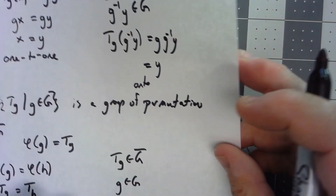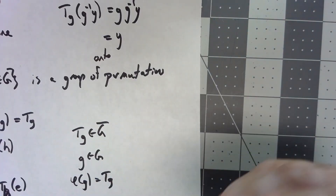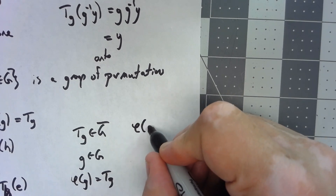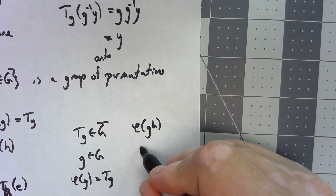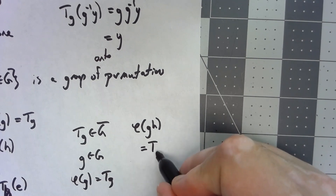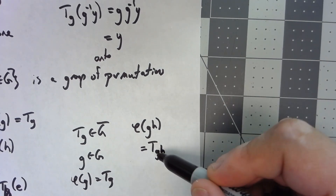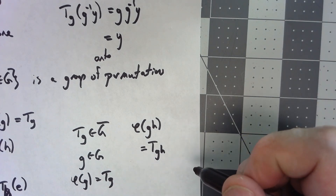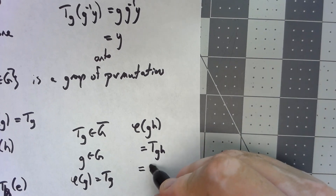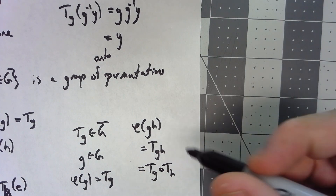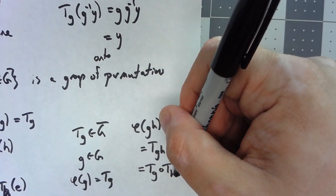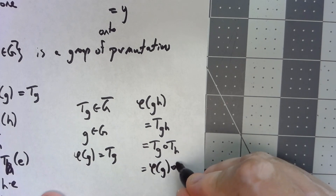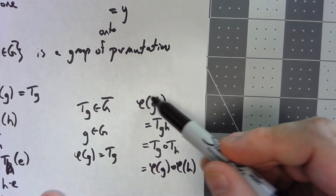Finally, we need to show the homomorphism property. Consider φ(gh) — that equals t_{gh}, which is a function mapping any element of G to gh times that group element. But that's simply equal to t_g composed with t_h, because multiplying on the left by gh is the same as multiplying on the left by h and then by g. So φ(gh) equals φ(g) composed with φ(h), and it has the homomorphism property.